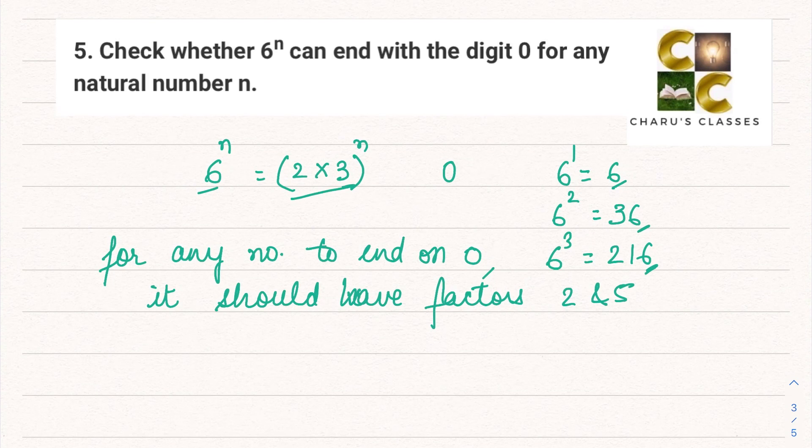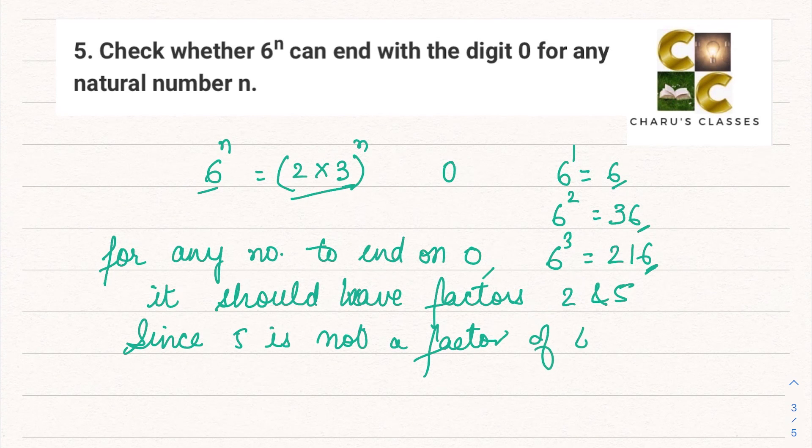But in this case, the factors of 6 are only 2 and 3. So since 5 is not a factor of 6, therefore 6^n can never end on 0.